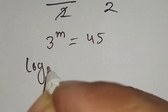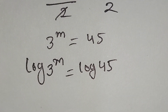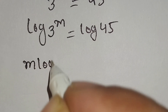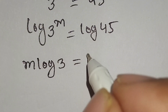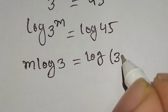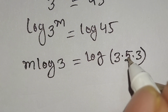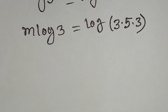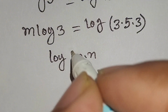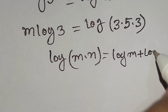Now we will take log on both sides. So we can write log 3 to the power m is equal to log 45. We can write log 3 to the power m as m log 3. And we can write 45 as 3 times 5 times 3. We know that log(m times n) is equal to log m plus log n.